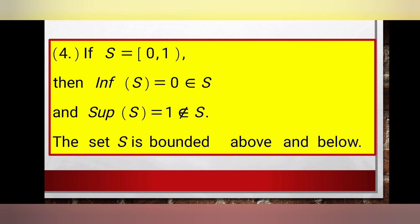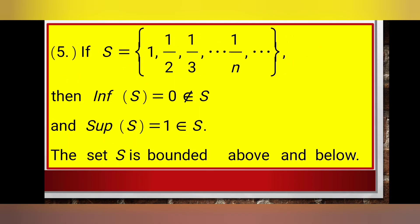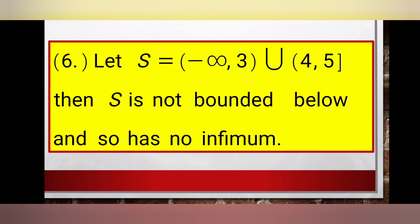Example five: if S is equal to the set {1, 1/2, 1/3, ..., 1/n}, then S is bounded above and below. The largest number in the set is one and the other numbers gradually approach zero. So the supremum of S is equal to one, which belongs to S, and the infimum of S is equal to zero, which does not belong to S.